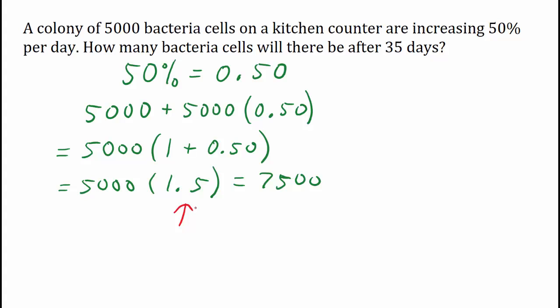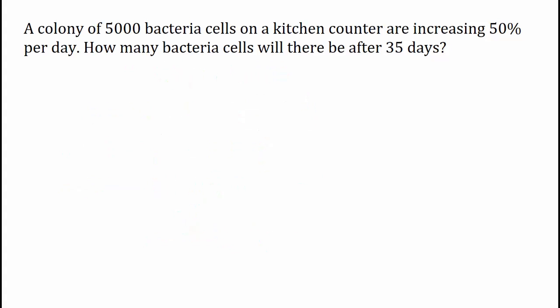We're multiplying 5,000 by 1.5. We'll be doing that every day, and so the 1.5 will be our multiplier.